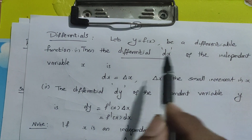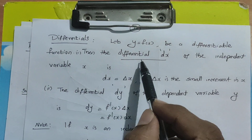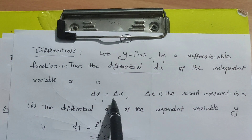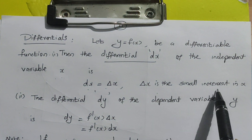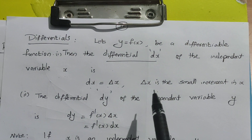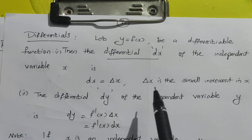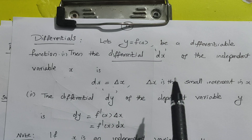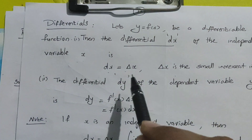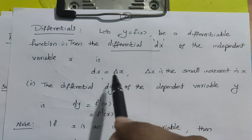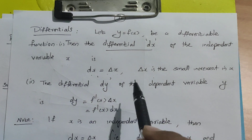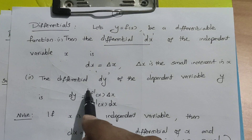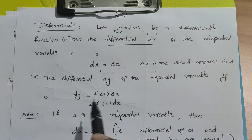Let y equal to F of X be a differentiable function. The differential dx of the independent variable X is dx equal to delta X. Delta X is a small increment in X. The differential of the dependent variable Y is denoted by dy.